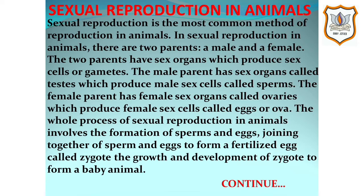The two parents have sex organs which produce sex cells or gametes. The male parent has sex organs called testes which produce male sex cells or male gametes called sperms. The female parent has female sex organs called ovaries which produce female sex cells or female gametes called eggs or ova.